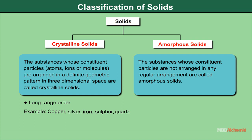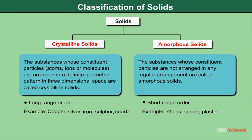Amorphous solids do not have a definite shape or form like crystalline solids. Some amorphous solids have some orderly arrangement, but it does not extend to more than a few angstrom units. Thus, amorphous solids are said to have short-range order. Common examples are glass, rubber, plastic, and coal.